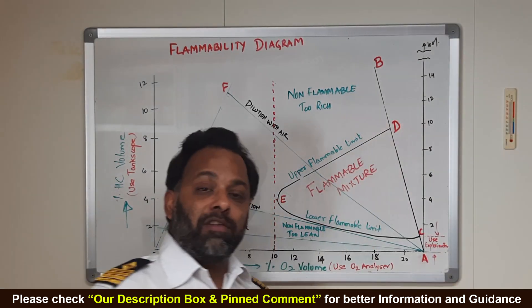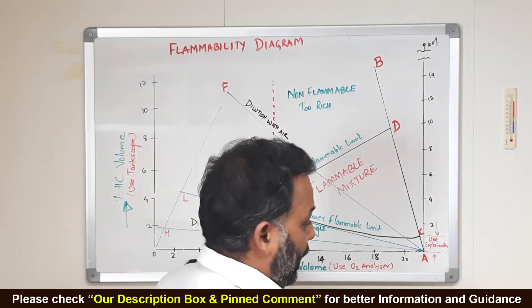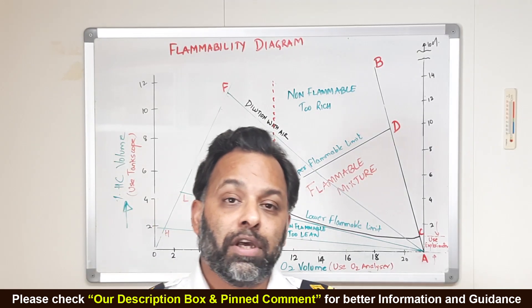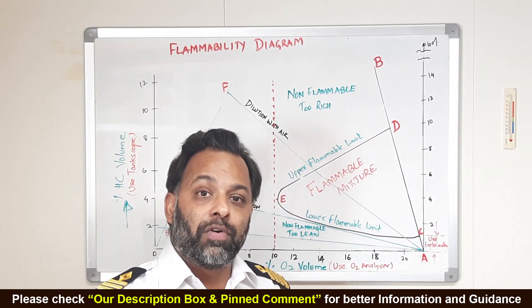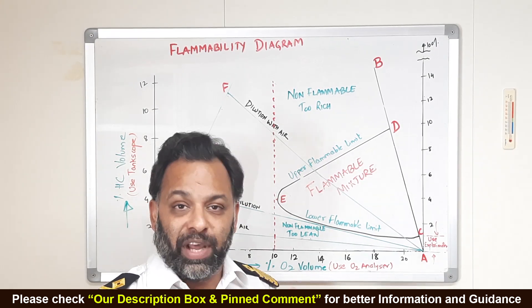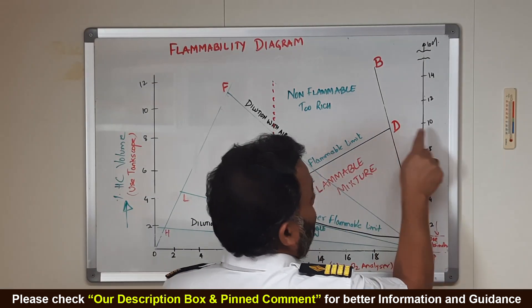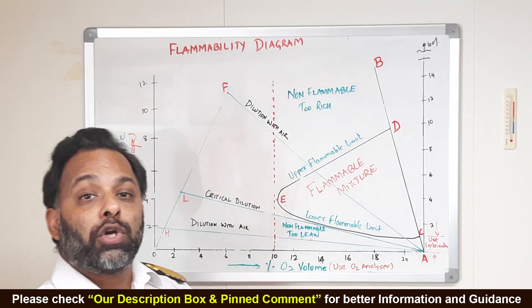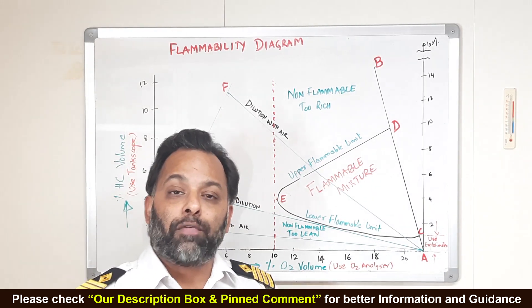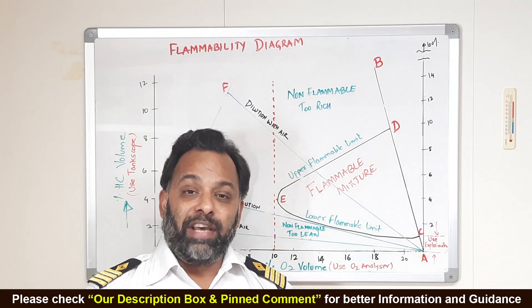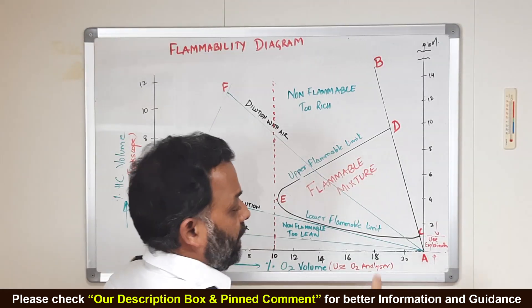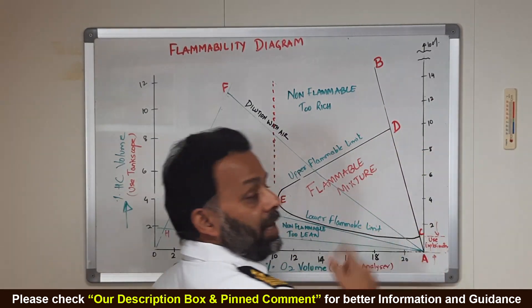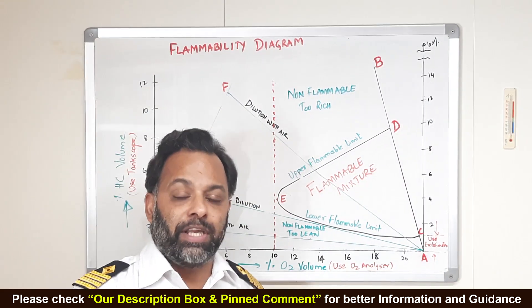For crude oil, upper flammable limit and lower flammable limit is 10% and 1% by volume of hydrocarbon respectively. What this means is, any mixture of hydrocarbon and oxygen below lower flammable limit, the mixture is too lean to fire. Anything above 10% of hydrocarbon by volume, this mixture is too rich to fire. That means, the amount of oxygen in this mixture is too less to sustain or to start a fire. Anything from point C to point D on this diagram is in the flammable range, explosive range, flammable region, flammable mixture.